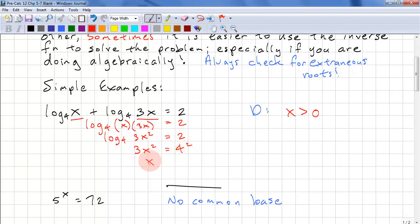So again we're raising both sides to the power with 4 as the base. So now we have x² = 16/3. So x = ±√(16/3), which equals ±4/√3, or we could say ±4√3/3.